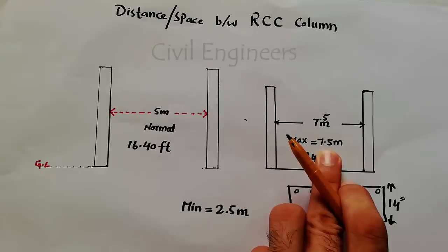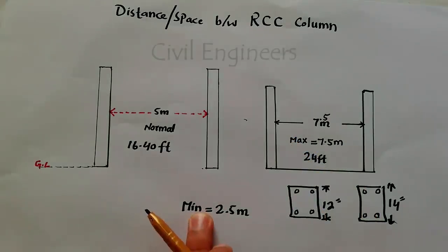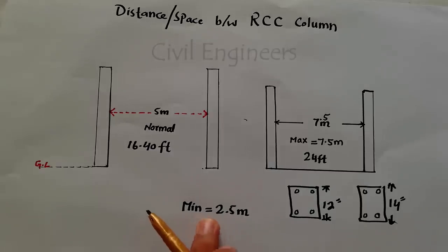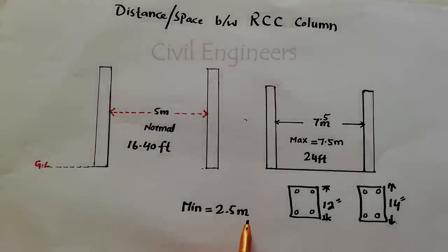And maximum will be 7.5 meter. But minimum, in different cases, minimum distance between two columns should not be less than 2.5 meter. So 2.5 meter is a minimum distance between two columns.